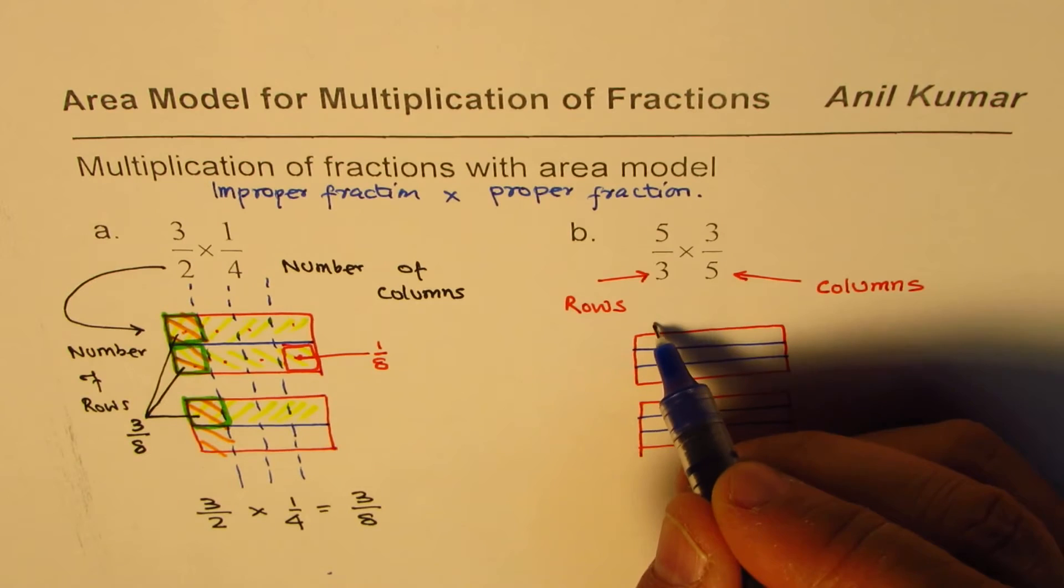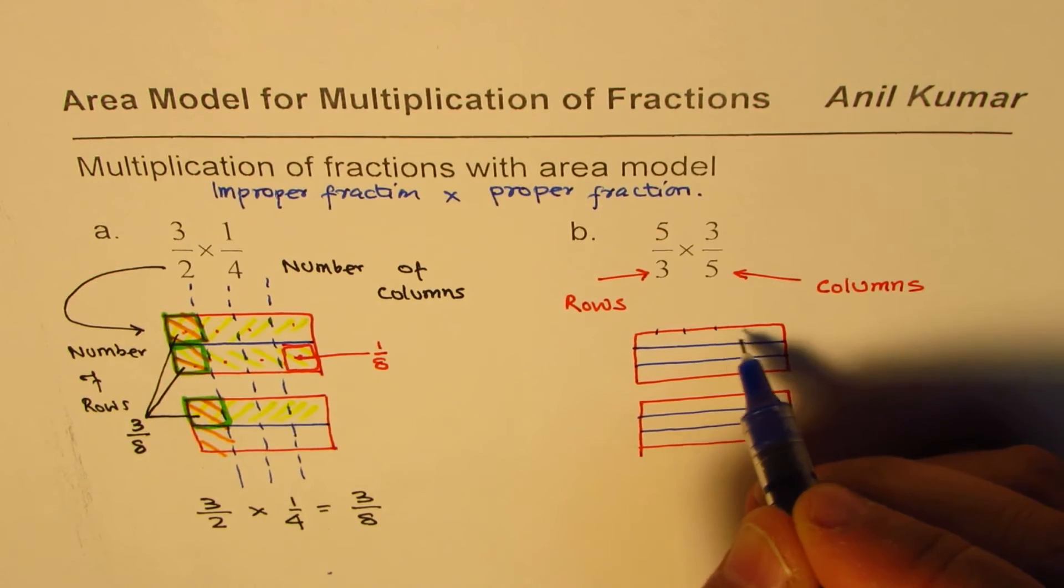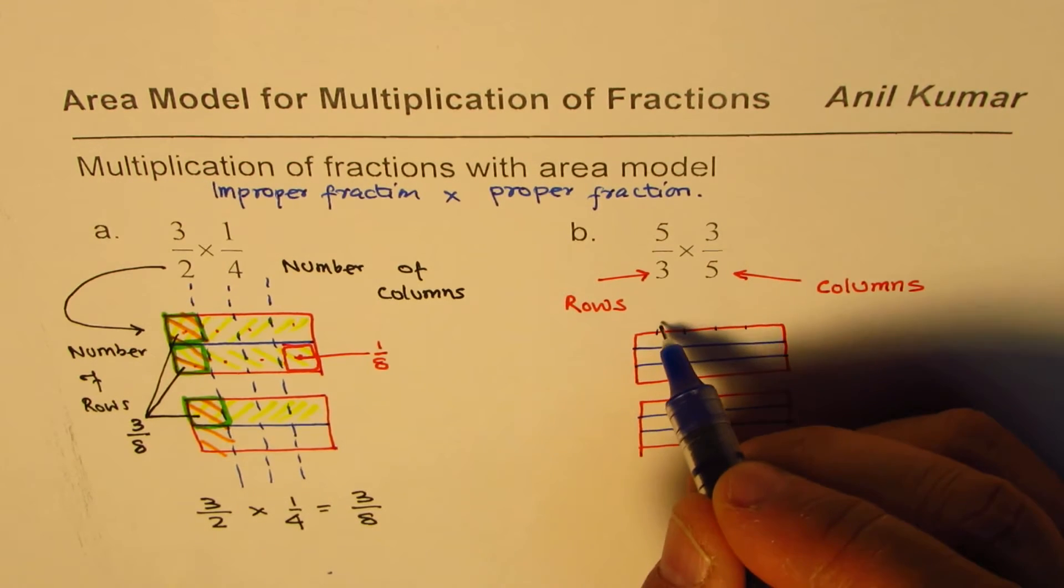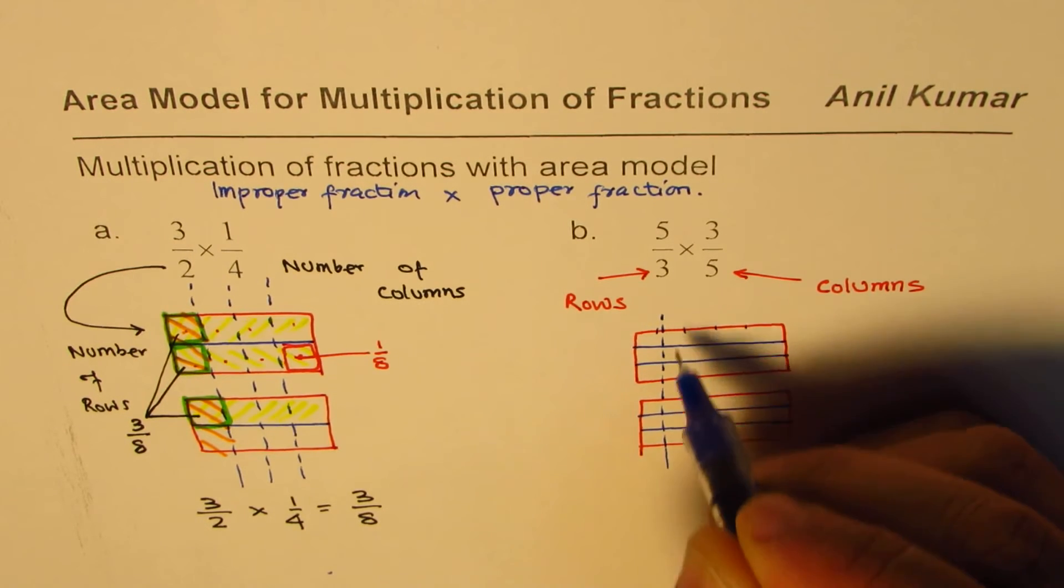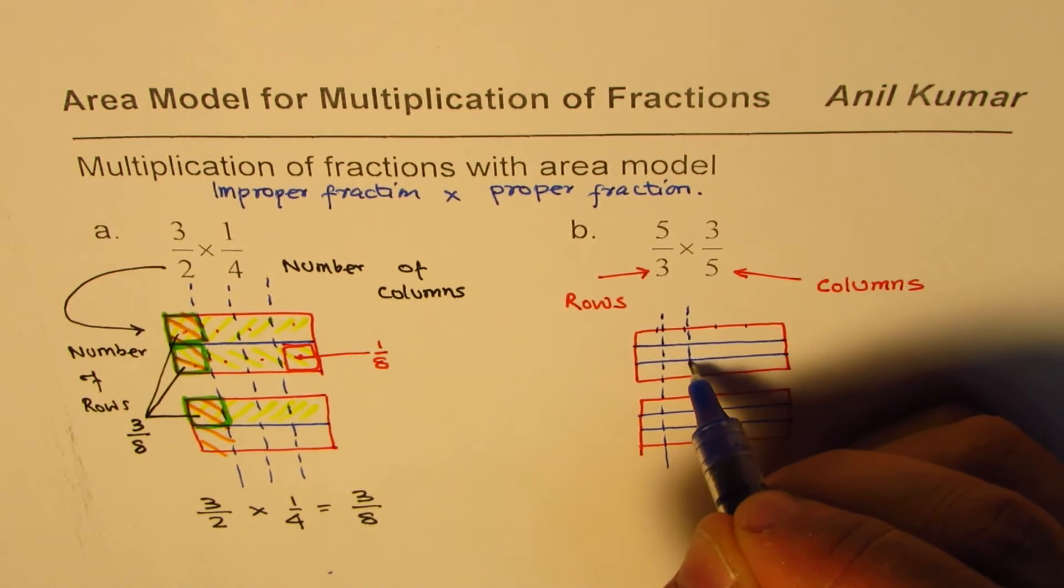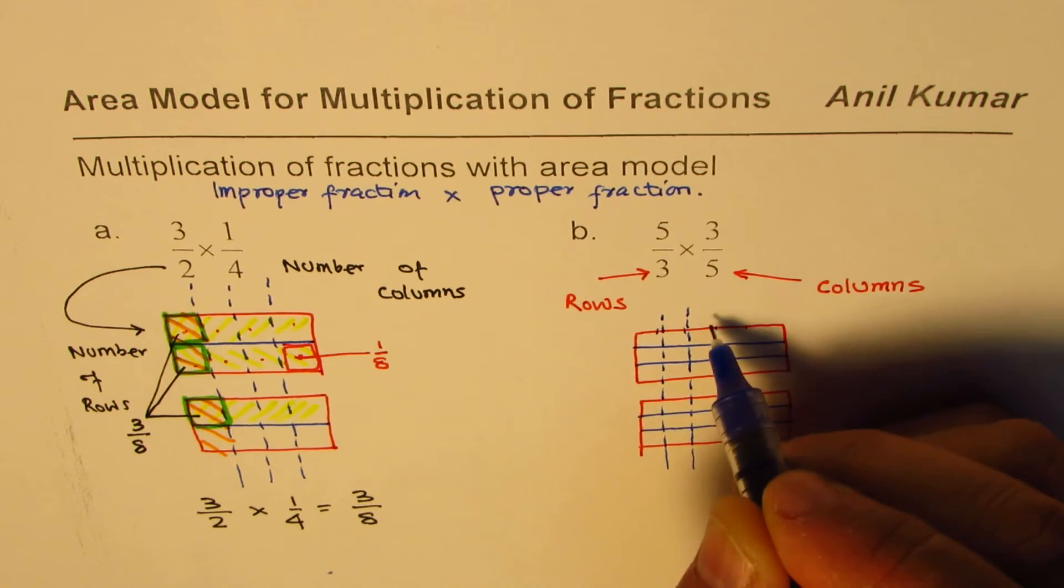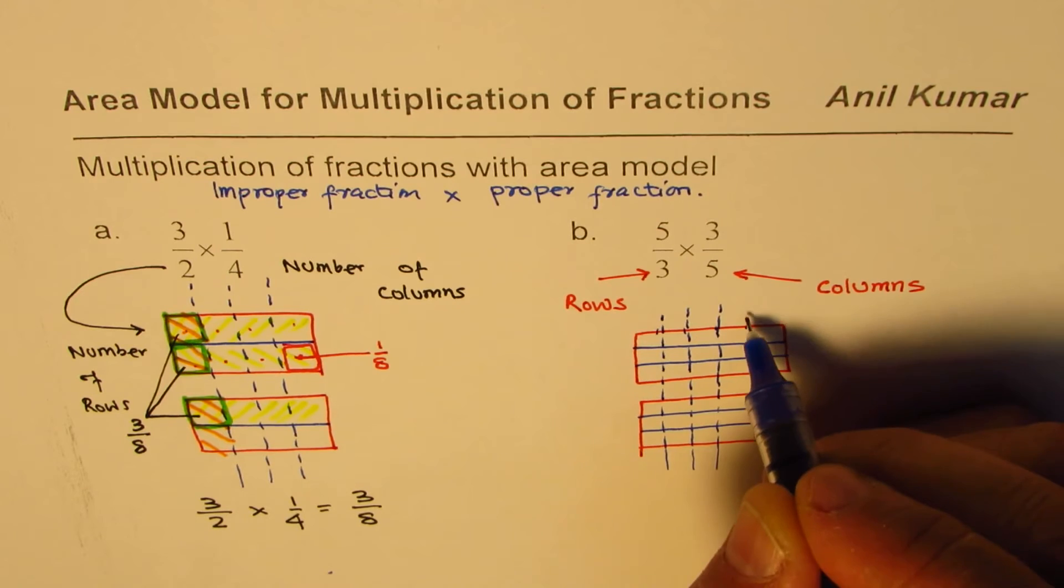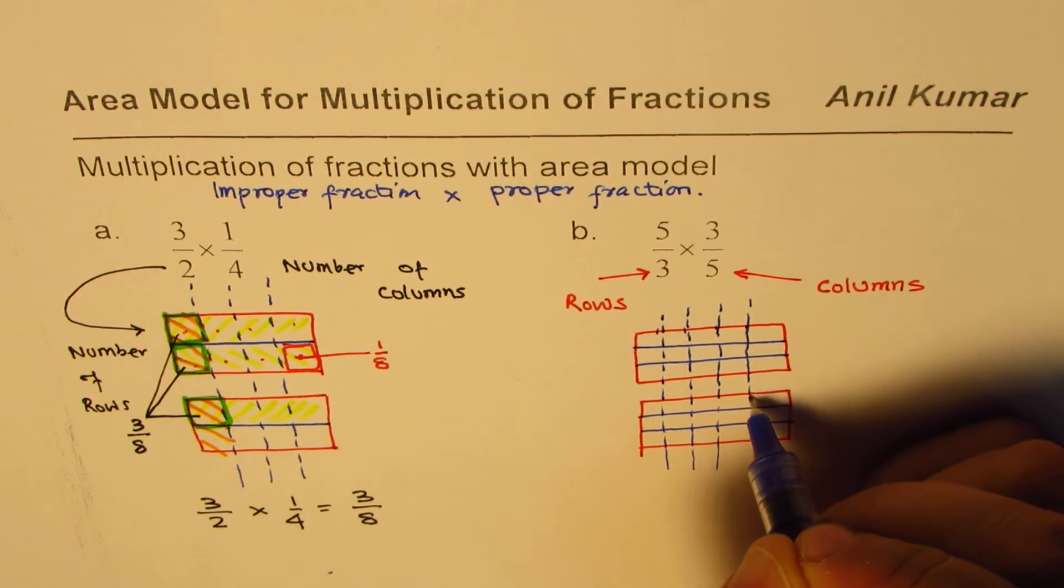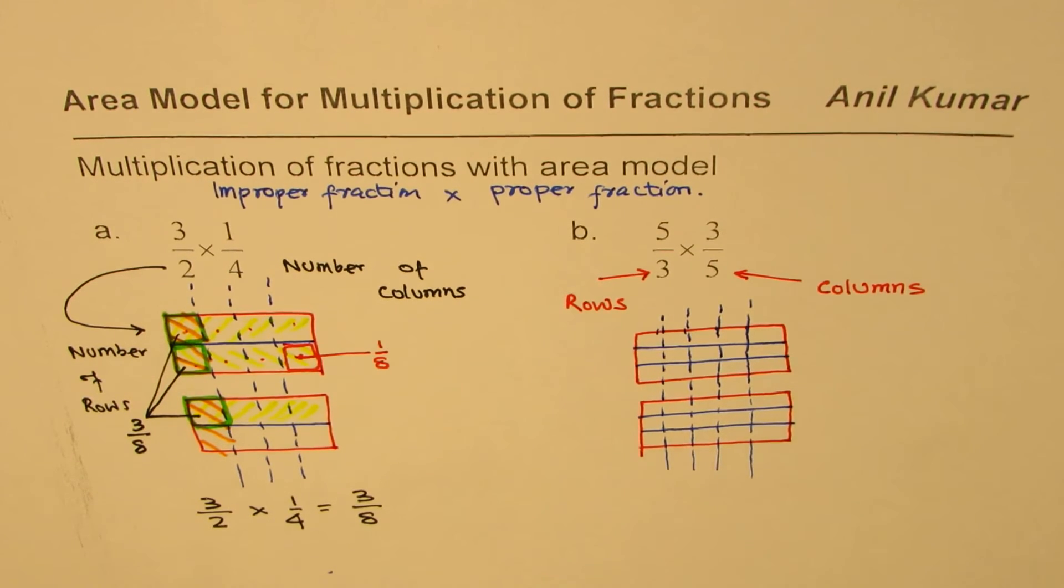So we will divide, say, 1, 2, 3, 4, and 5. Okay, seems okay. So we will do 1 column, 2 columns, 3 columns, 4, and 5.